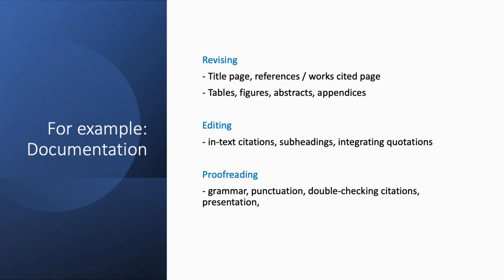In terms of what we're focusing on in this part of the writing process: revising would be like looking at your title page, making sure you have an appendix, or your references pages all complete. Editing means making sure that your quotations are integrated properly. And then proofreading is double-checking your citations and looking at grammar.